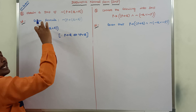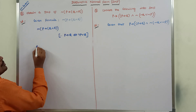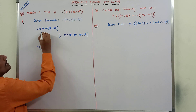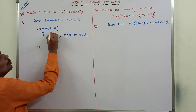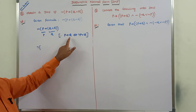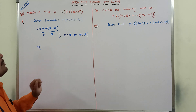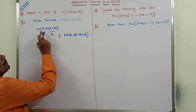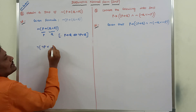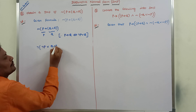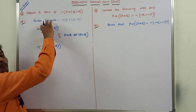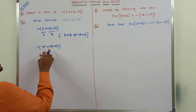According to this formula, the given formula can be converted. Treating P as P and (Q and R) as Q in the formula, P conditional Q becomes negation P or Q. So in place of negation P we write negation P, and in place of Q we write (Q and R). The given formula thus becomes: negation of (negation P or (Q and R)).